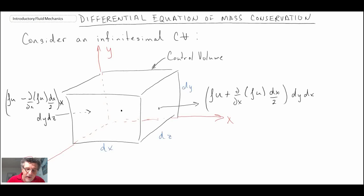So there we have mass flux coming in on the back surface and mass flux leaving the front surface, and we are going to apply this for all three directions.